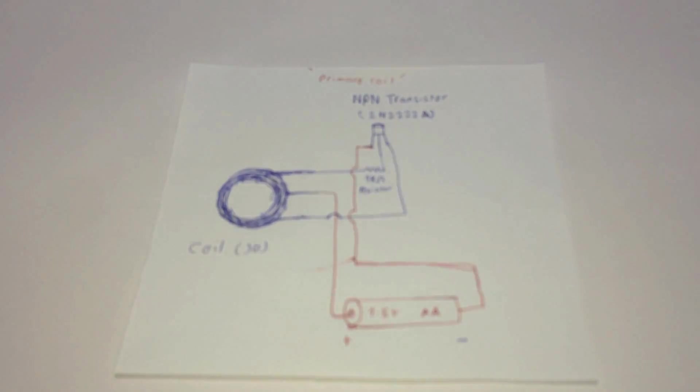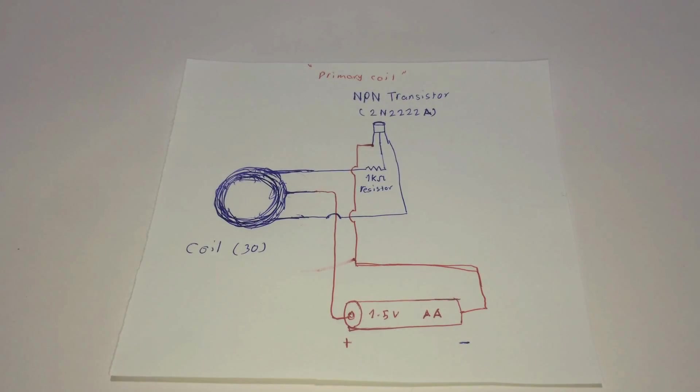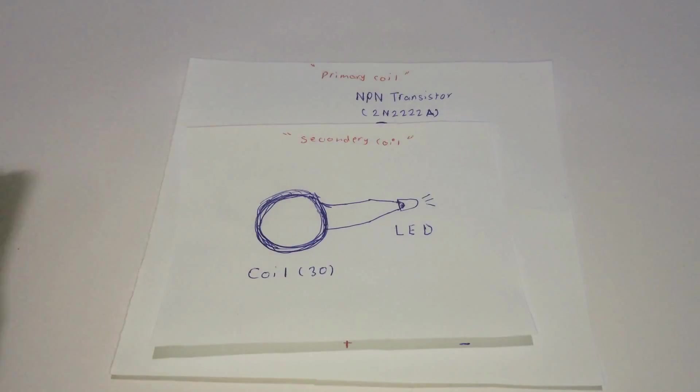This is the circuit diagram of our project. This is the transmitter part or you can say the primary coil, and this is the secondary coil or you can say the receiver. They are pretty simple and you can download both of them, link down in the description, make sure to check it out.